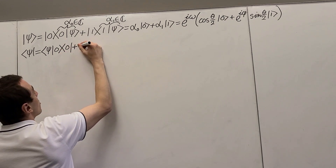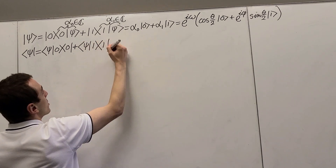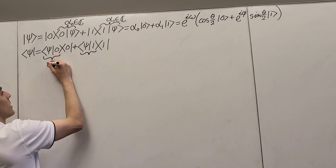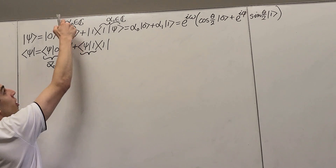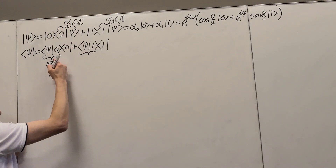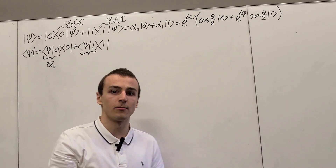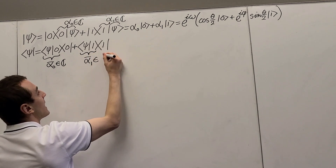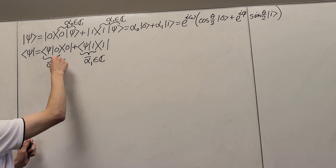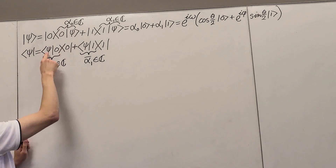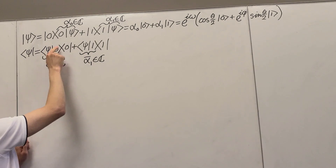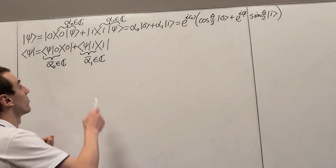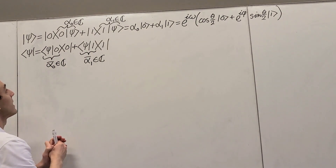We can identify inner products in this expression. Each inner product evaluates as a complex number that is the complex conjugate of the corresponding coefficient. So here we have alpha zero, and the bra version gives us alpha zero bar, where the bar denotes the complex conjugate. And over here we have alpha one bar. Why is it the complex conjugate? It's because the order is swapped in the inner product — this property is one of the axioms of an inner product, called conjugate symmetry. If you swap the order of the bra and ket, you get the complex conjugate.